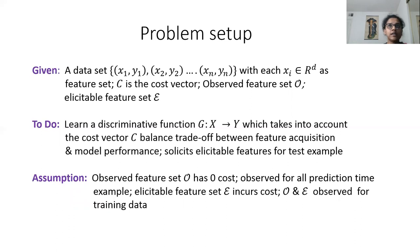We have certain assumptions. The first assumption is that the observed feature set comes at zero cost and the elicitable feature subset comes at a cost. Both feature subsets are observed for training data, whereas for a test example only the observed feature subset is there.